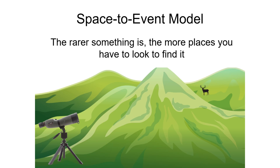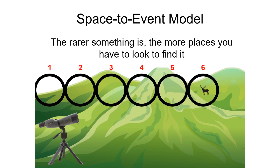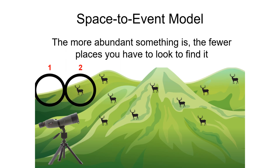For example, let's say you're glassing a hillside for mule deer with your spotting scope. If there aren't very many deer on the hillside, you'd expect to have to glass a lot of the hillside before you find one. In this example it took six spotting scope view sheds to find a deer. If we knew how many square feet you were viewing with each spotting scope view shed, we could produce an estimate of mule deer density — the number of deer per square foot on this hillside. Conversely, if there were lots of deer on the hillside, you'd expect to find one without viewing much of it. In this example it only took two view sheds of the spotting scope to find a deer.